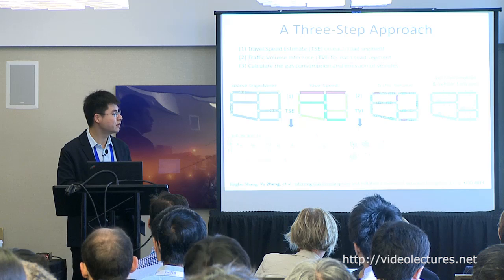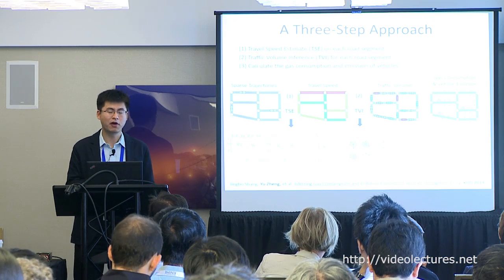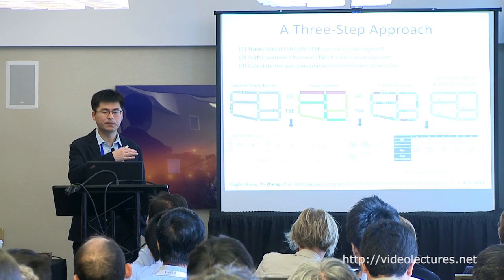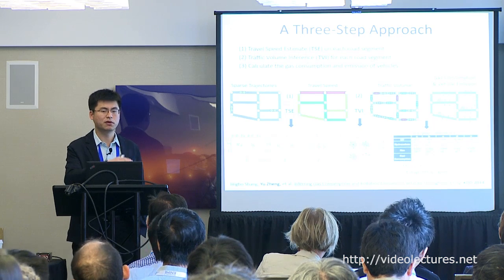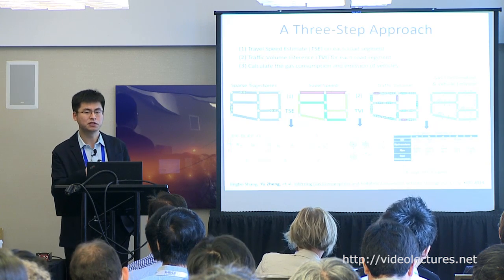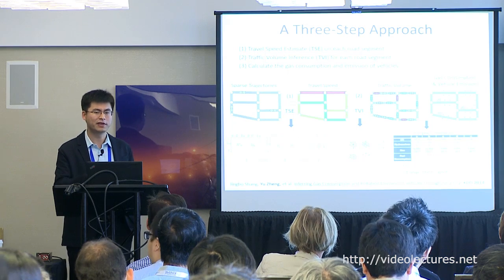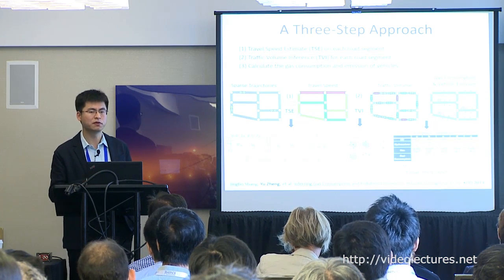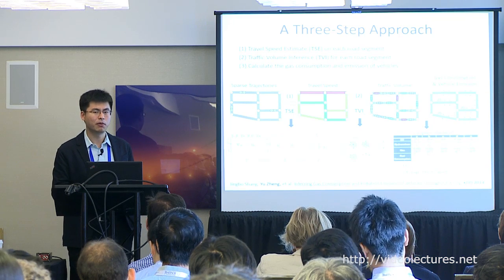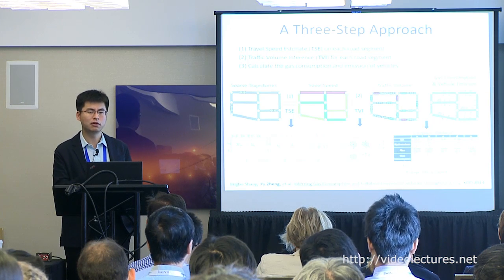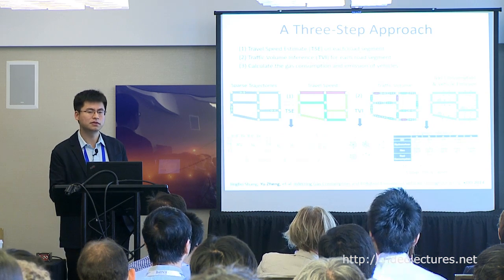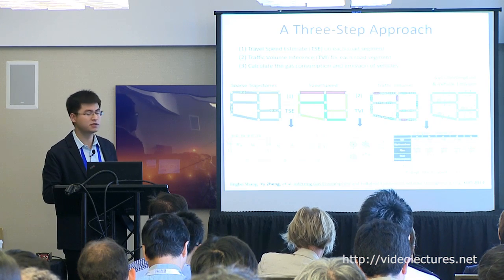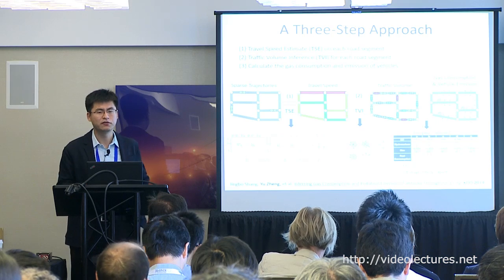Third, we employ existing functions from environmental science. Once we know the travel speed and traffic volume of a certain type of vehicle, we can calculate gas consumption and pollution emissions. To handle vehicle configuration, we use statistical data from the city.